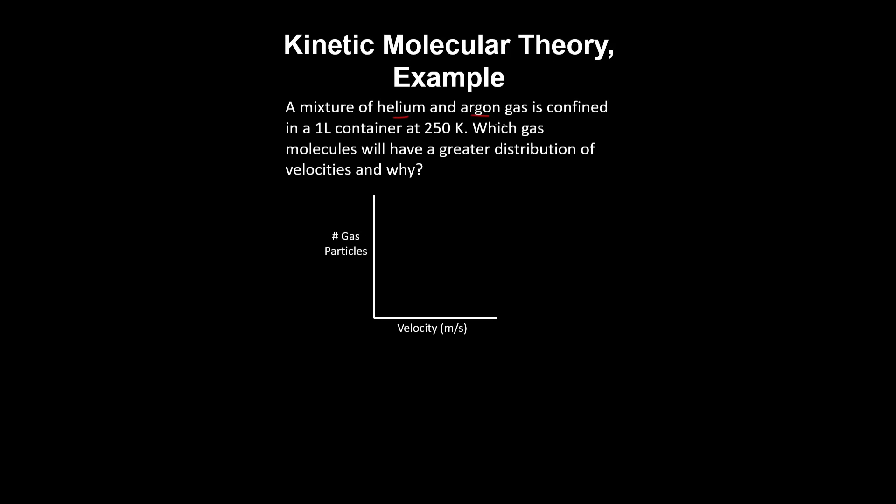A mixture of helium and argon gas is confined in a 1 liter container at a temperature of 250 kelvin. Which gas molecules have a greater distribution of velocities and why?